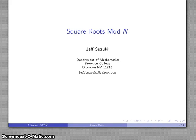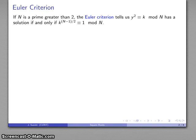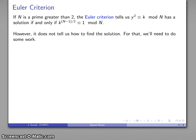Let's see how we'd find square roots mod n. We have our Euler criterion: if n is a prime greater than 2, then y² ≡ k has a solution if and only if k^((n−1)/2) ≡ 1. Unfortunately, the Euler criterion only tells us that a solution exists — it does not tell us how we can find the solution, and for that we'll have to do a little bit of work.